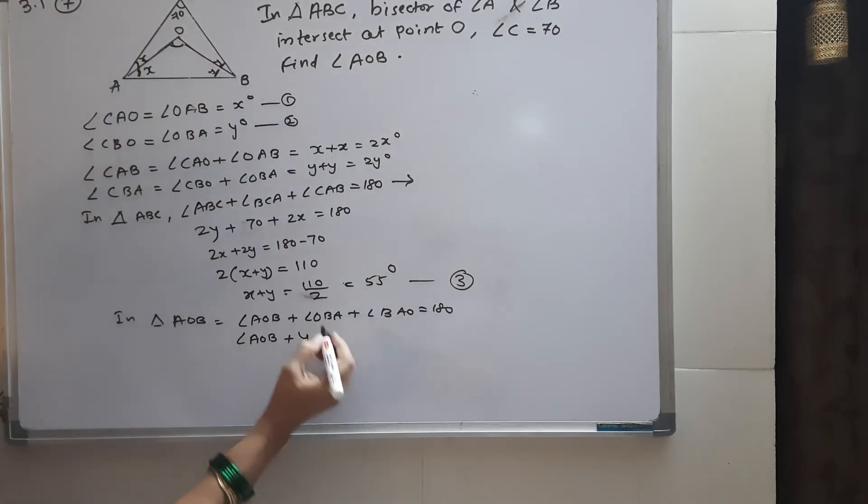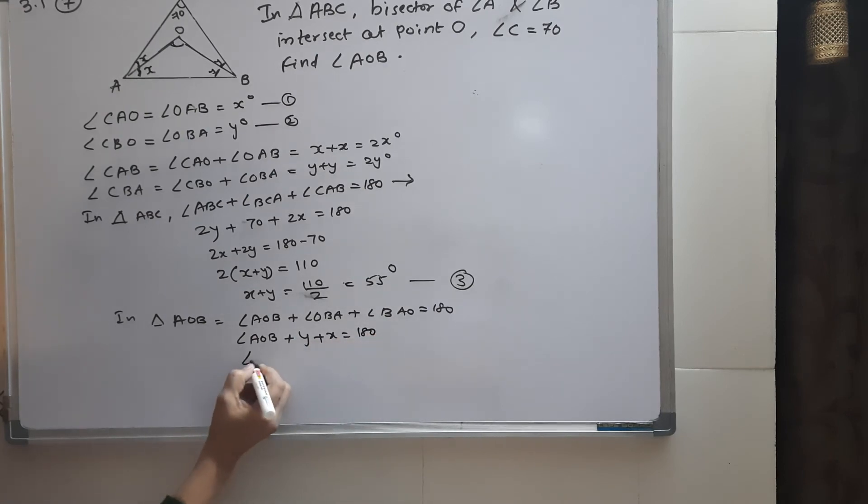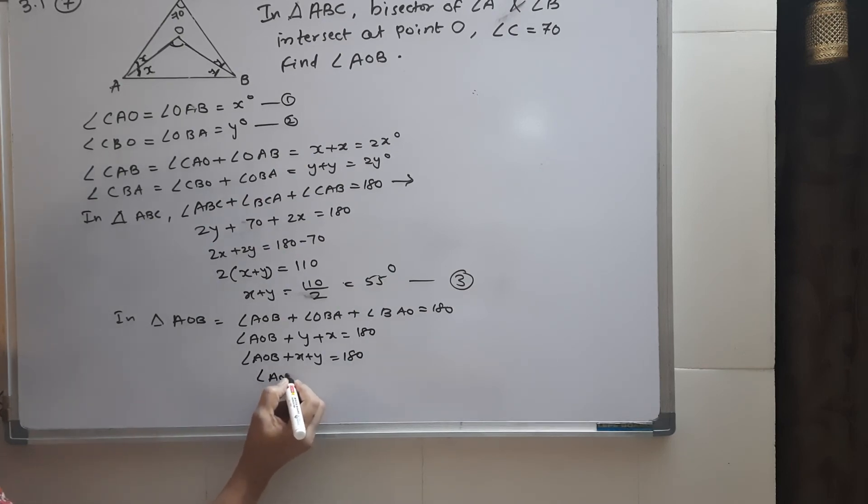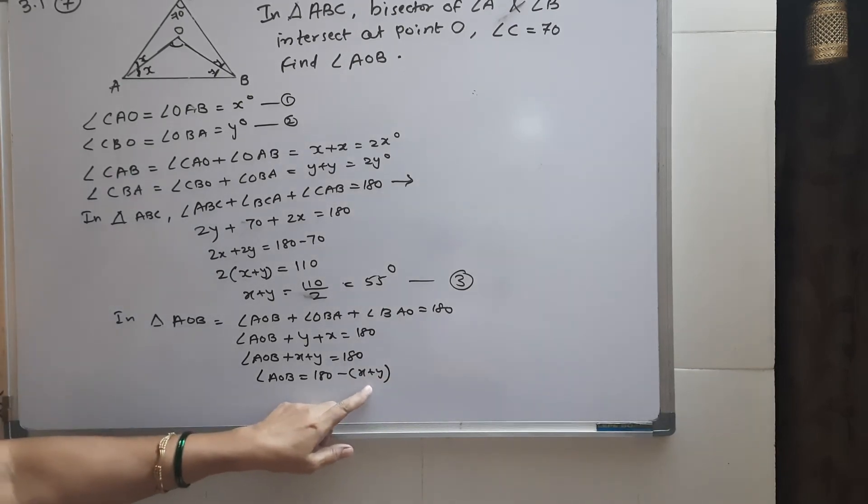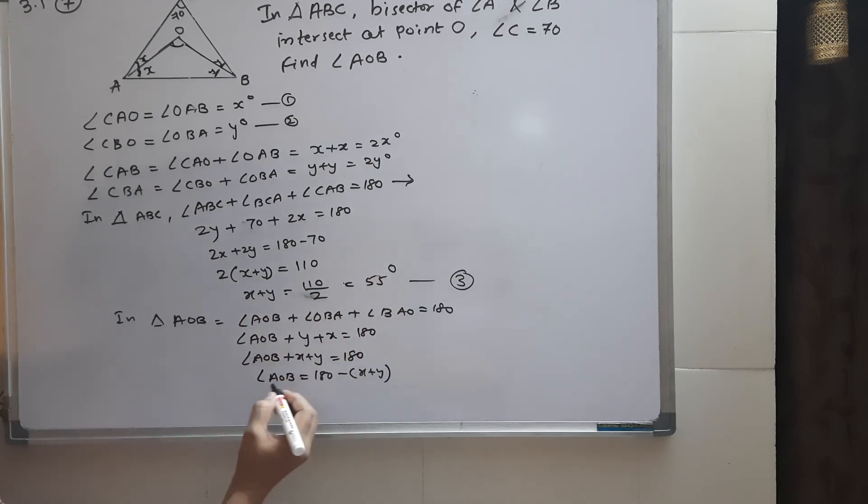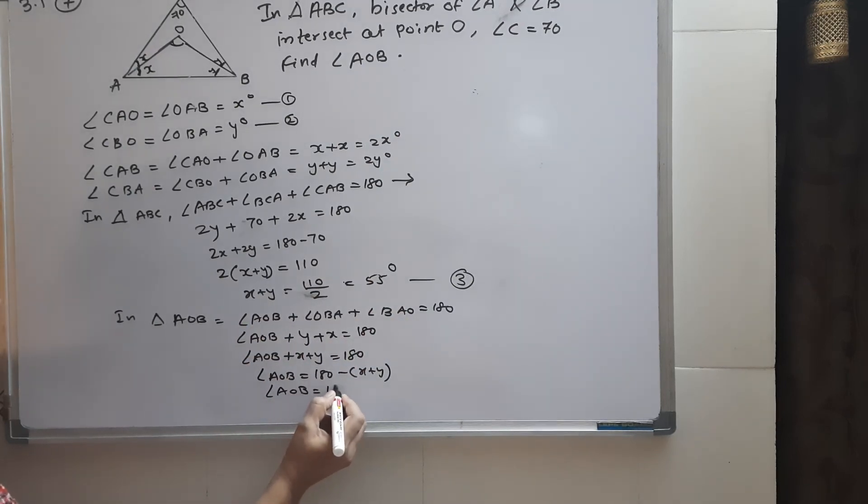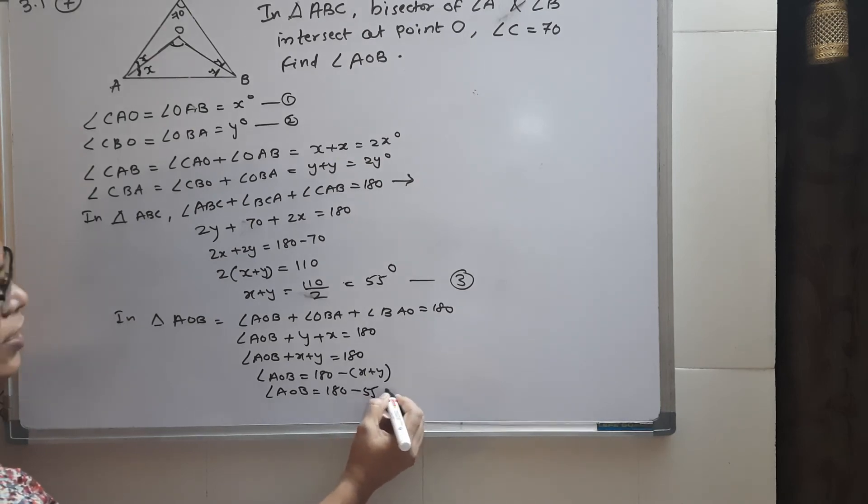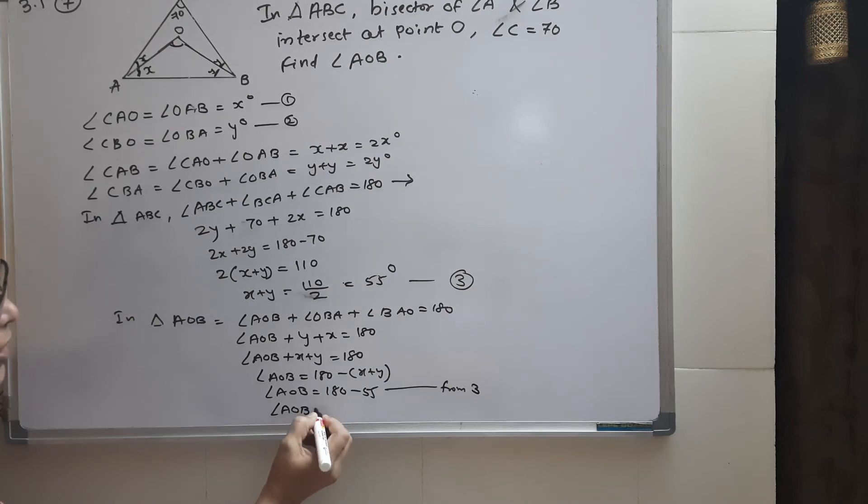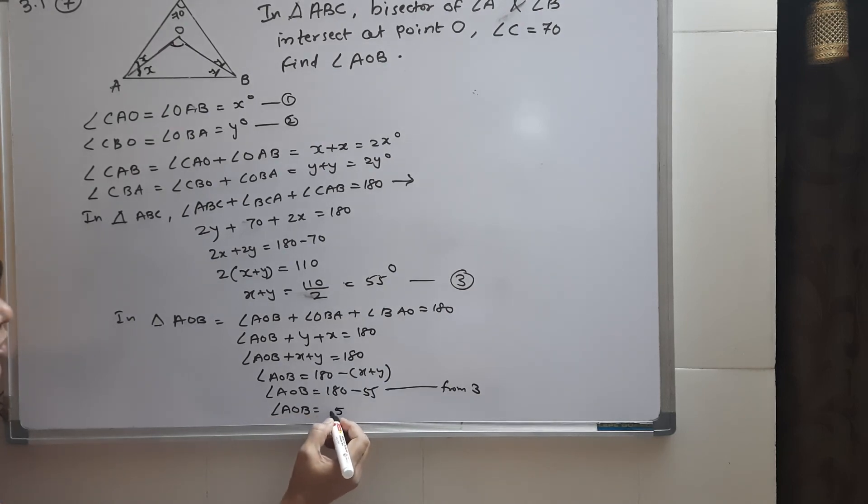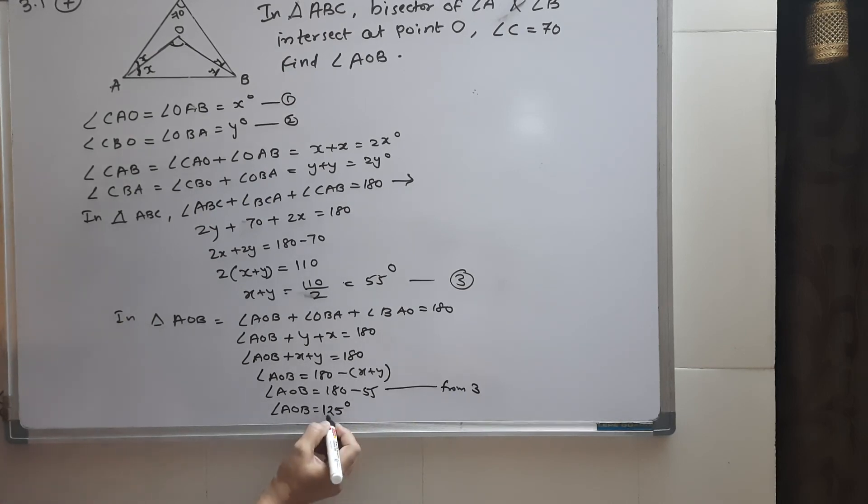Angle AOB equals 180 minus angle OBA minus angle BAO, which is 180 minus Y minus X. Since 2X plus 2Y equals 110, X plus Y equals 55. Therefore, angle AOB equals 125 degrees.